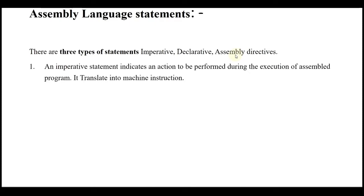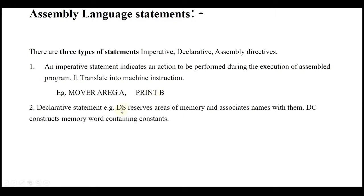There are three types of statements. First is the imperative statement, which indicates an action to be performed during execution of the assembled program — it translates into a machine instruction. For example: MOV, ADD, SUB. For MOV, ADD, SUB there are two operand fields; for PRINT and READ there is one operand field. The second type is the declarative statement. DS (declarative storage) reserves an area of memory and associates a name with it. DC (declarative constant) constructs a memory word containing a constant. For example, 'A DS 5' assigns memory for five locations, and 'B DC 3' gives a constant value for variable B.